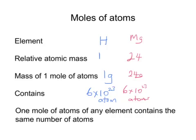A third example is sulfur. An atom of sulfur weighs 32, so one mole of sulfur atoms would be 32 grams, and again contains the same number of atoms — 6 times 10 to the 23. After a while, this number, 6 times 10 to the 23, becomes unimportant. We just call it one mole of atoms.